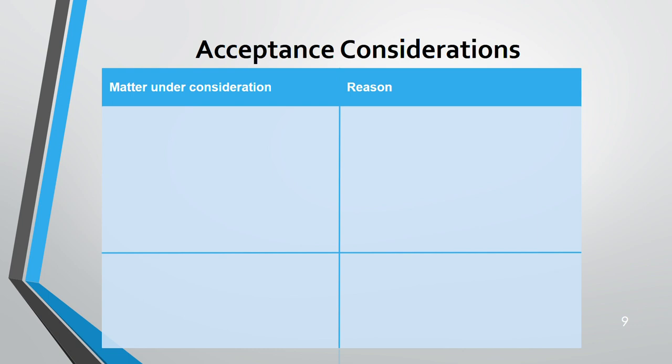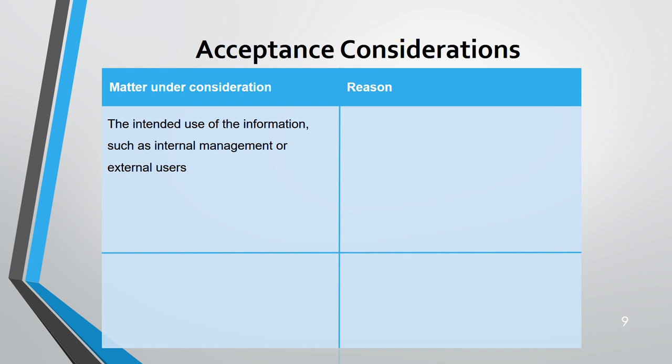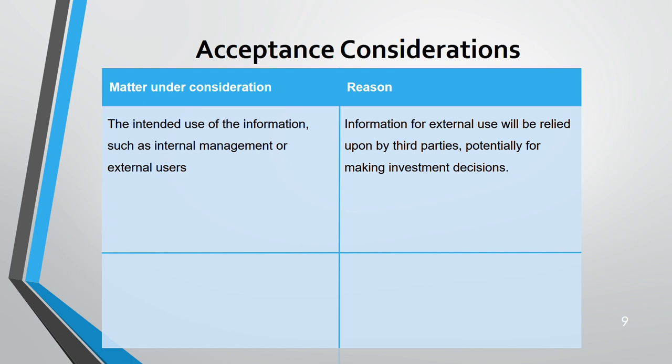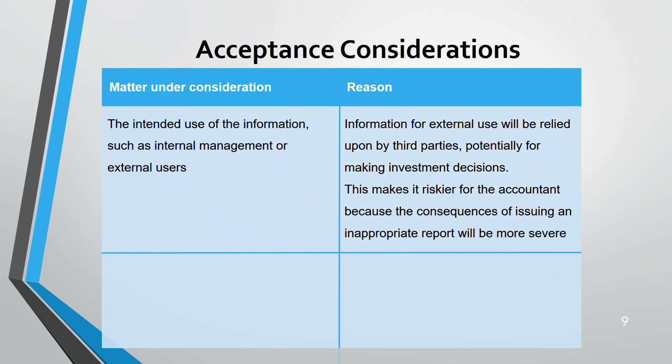Acceptance considerations: first, consider the use of the information — is it for internal management or external users? External users rely on it to make investment decisions, and internal management may use it for planning or strategy. Because third parties rely on it, it is riskier for the accountant, and the consequences of issuing an inappropriate report are more severe.